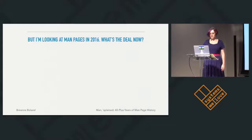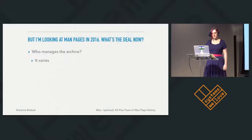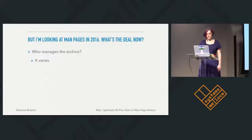But what about you, looking at ManPages in 2016? Who manages the archive? The answer is it varies. One of the biggest, most actively managed archives is man7.org, overseen by a man called Michael Kerrisk — he's the third overseer, having managed it since 2004. Because he's had the specific goal to fill in gaps of ManPages, he's authored or co-authored fully a third of the pages in that archive. There are a couple other archives — guy.net is also very good, and kernel.org.